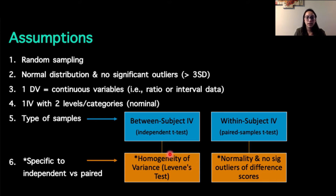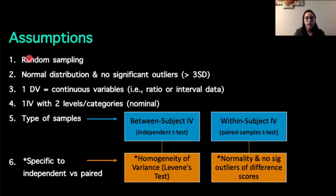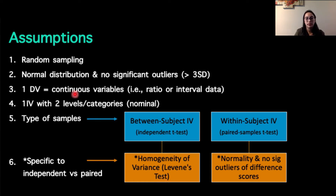These two orange boxes are going to be specific to the type of test you've determined. So when asked what are the assumptions for an independent t-test, you would have these first four plus the fact that your independent variable is a between-subject variable plus homogeneity of variance. If you had a paired samples t-test and it asked you to list the assumptions, it would be these first four, within-subject independent variable, and then normality and no significant outliers of the difference scores.